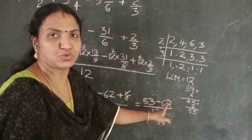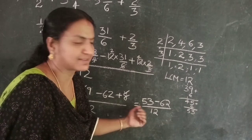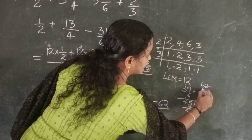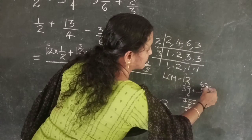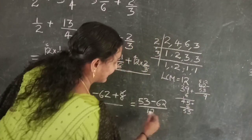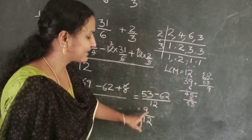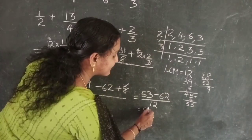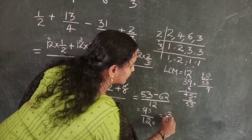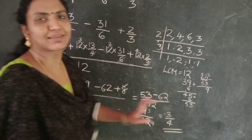53 is positive and 62 is negative — different signs, so take the difference: 62 minus 53. Here 2 minus 3 is not possible, so borrow: 12 minus 3 is 9, giving 9. So we have 9 over 12. Cancel by dividing numerator and denominator by 3: 9 divided by 3 is 3, and 12 divided by 3 is 4. The answer in simplest form is 3/4.